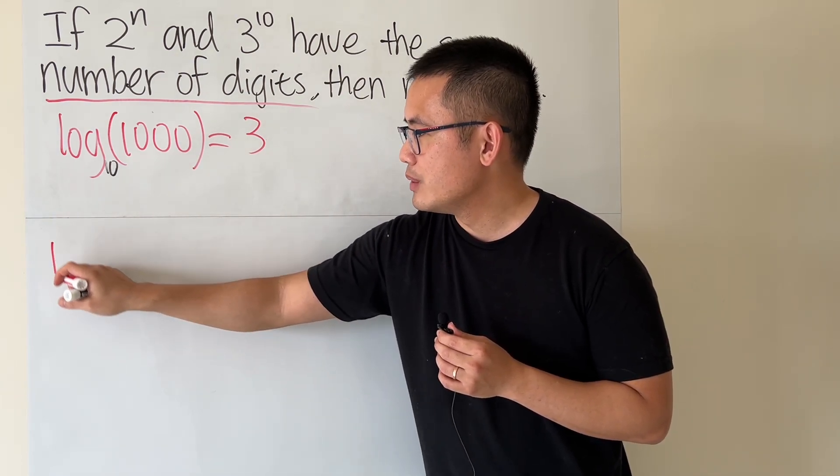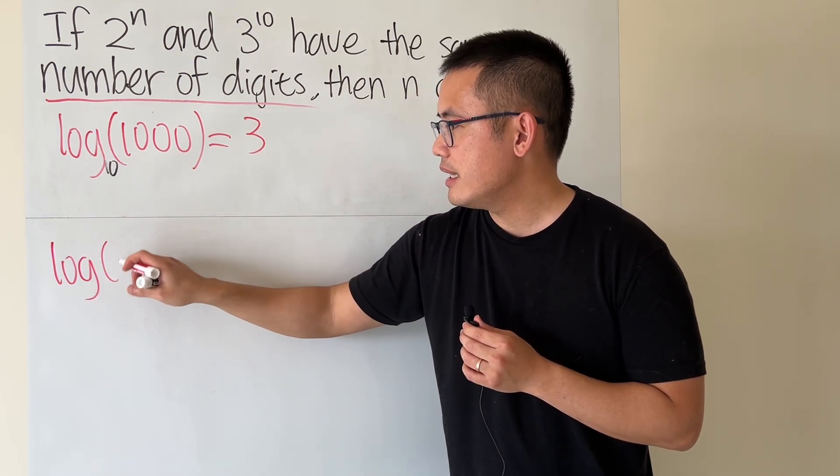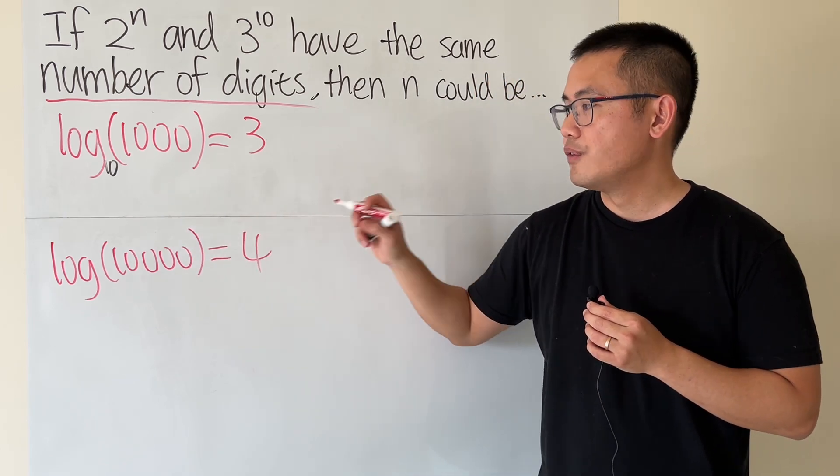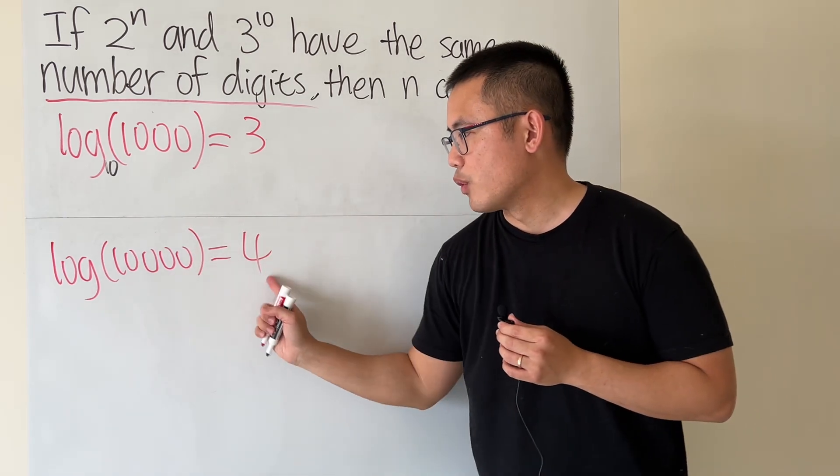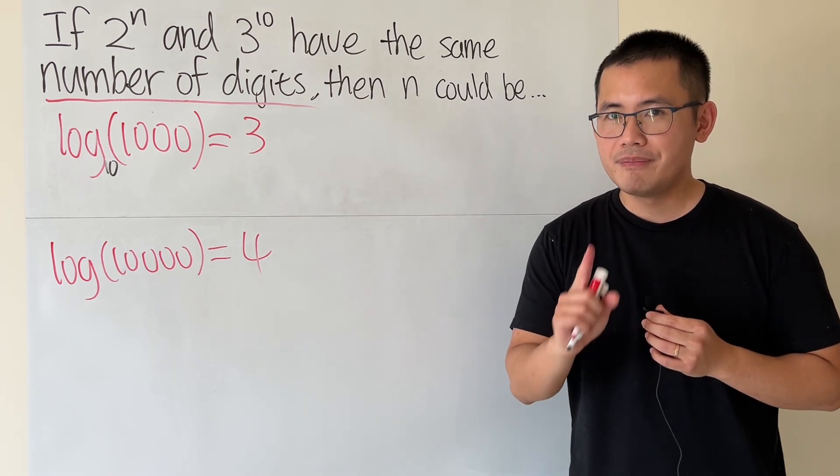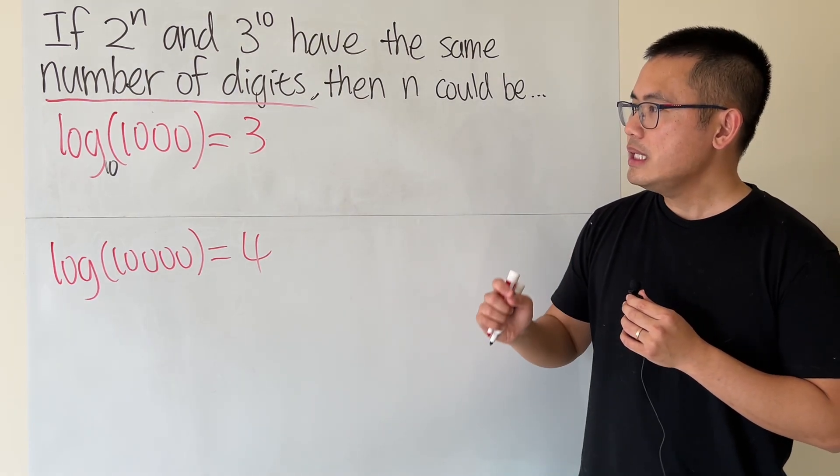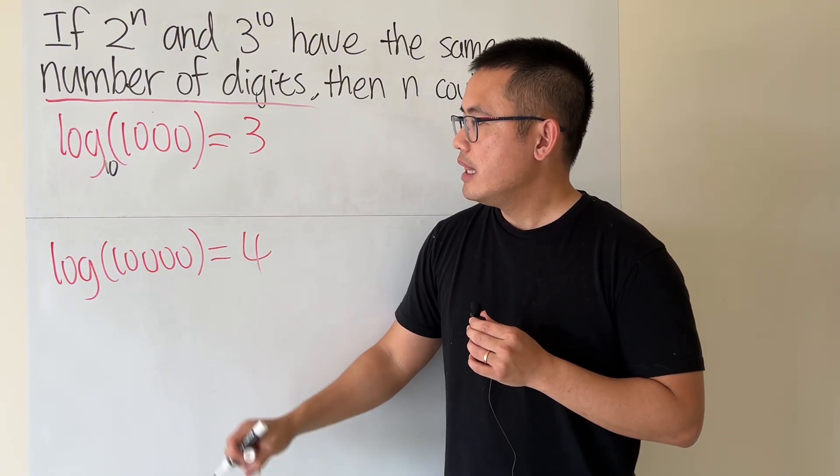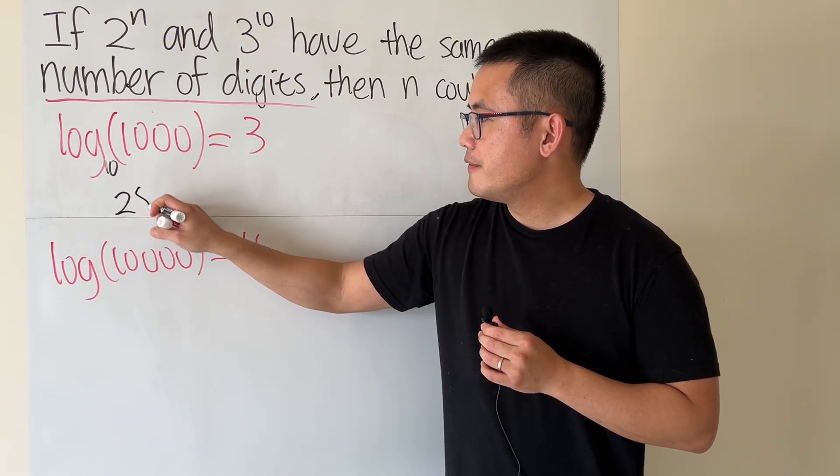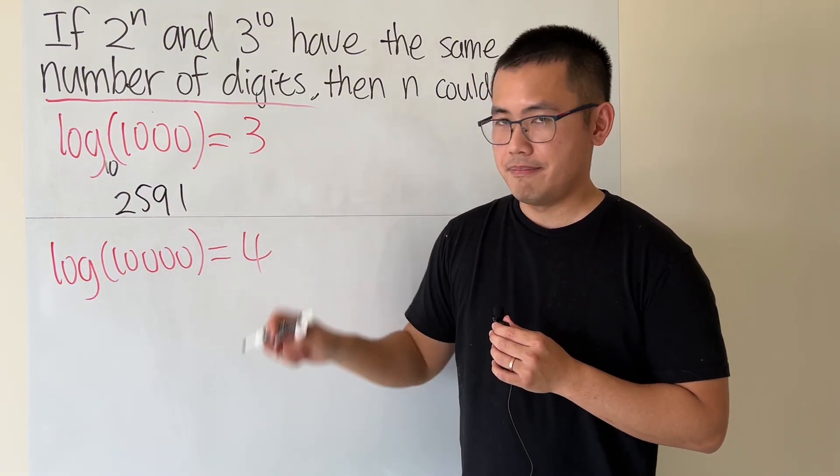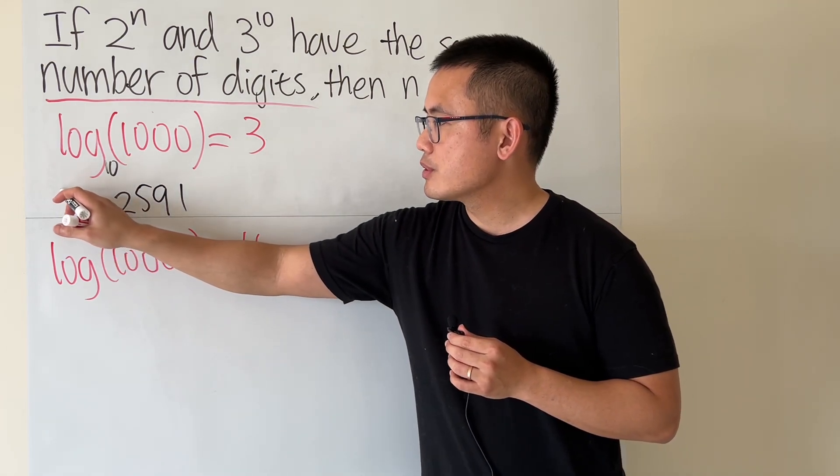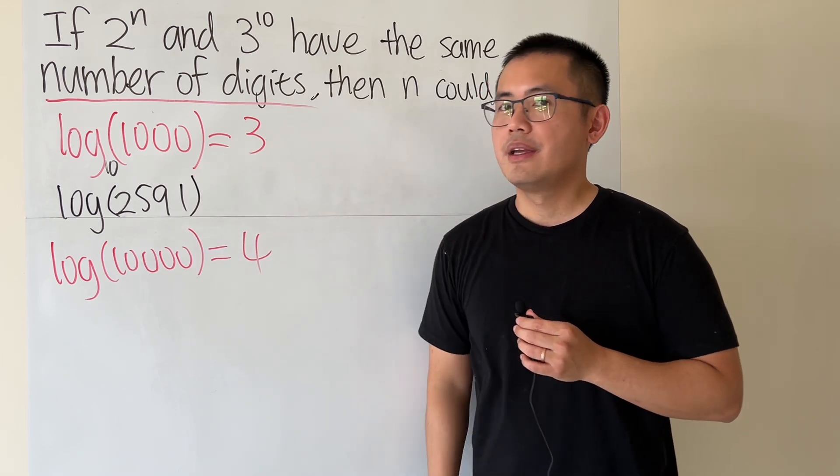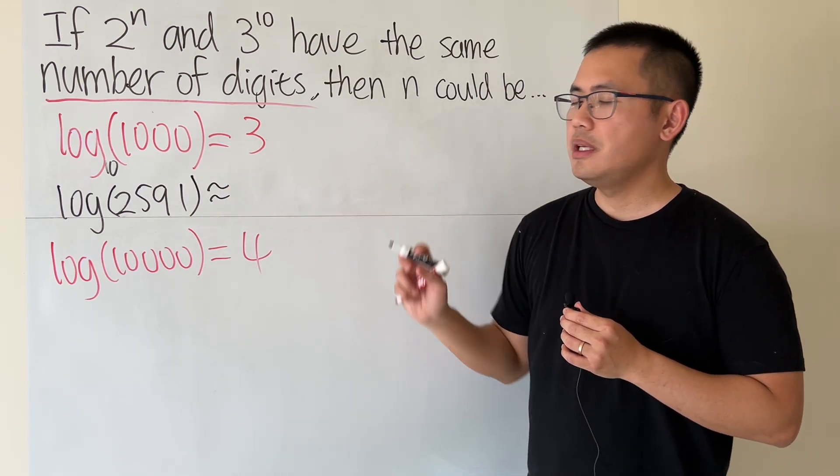I can just say log, let's say we have 1000, and what's the answer for that? 3. Because this is the base 10 raised to the third power gives us 1000. And then we can do another one. Let's say we have log, again base 10, and let's say we have 10,000. Then in that case, we will get 4, because 10^4 gives us 10,000. Now check this out. What if we pick a number between 1000 and 10,000? Let's say 2591. And I'm just going to take log base 10 of this. Let me ask you, what will the output be?